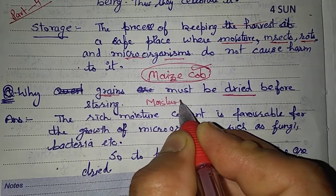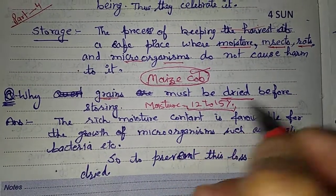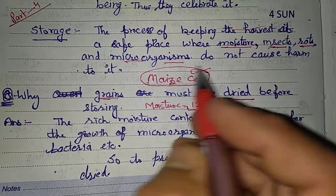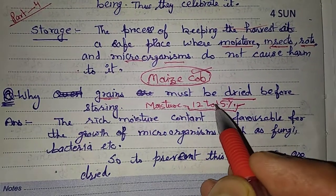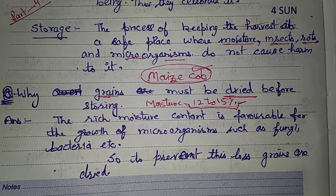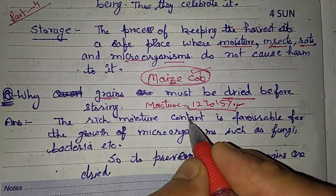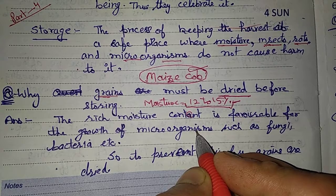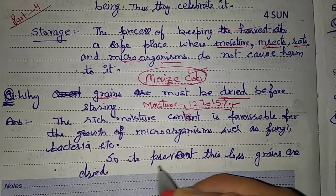The moisture in the grain, when we want to store it, should be 12 to 15% — not more than that. This is the most suitable level. If moisture is higher — say 18% or even 50% — then insects and microorganisms will grow in the grains. Rich moisture content is favorable for the growth of microorganisms such as fungi and bacteria. So to prevent this loss, grains are dried.